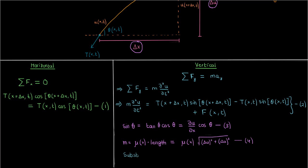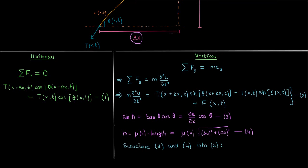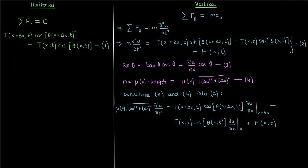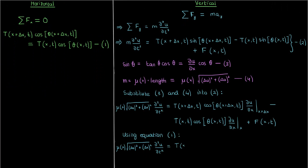Now let's take all of this and substitute it back into our vertical forces expression in equation 2. We're going to use the horizontal component equation, or equation 1, to replace this first tension term with T of x and t times cosine of theta at x and t. This will allow us to factor out the tension term from the right-hand side of the equation.